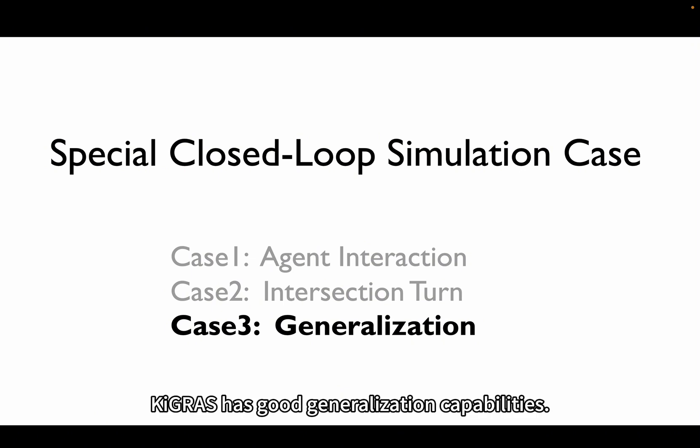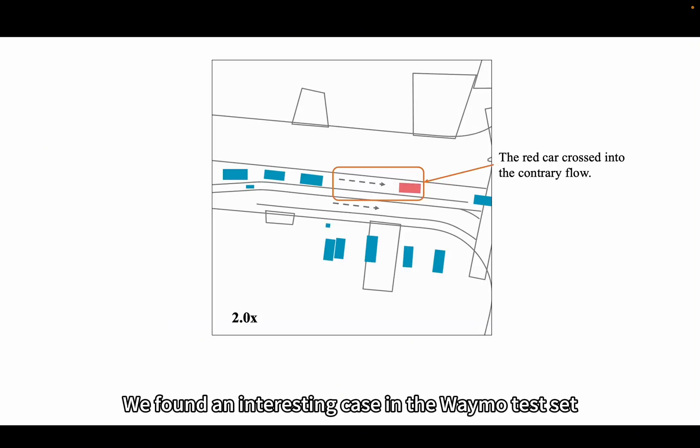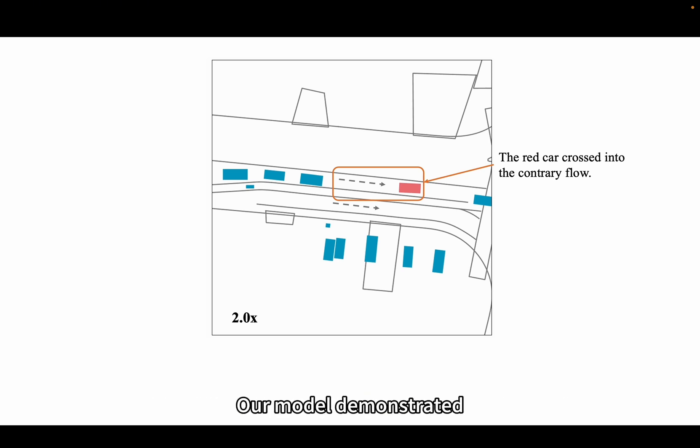In addition, Keygrass has good generalization capabilities. We found an interesting case in the Waymo test set where a red car is traveling against traffic in the opposing traffic flow. Our model demonstrated a degree of generalization to this corner case.